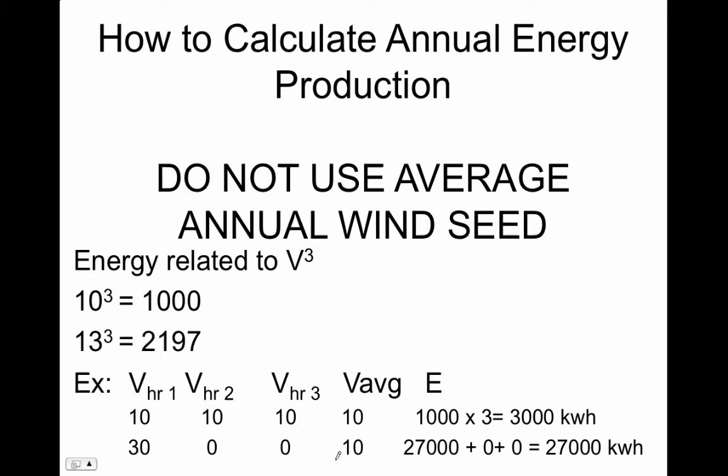The average wind speed can be very confusing. Look at the difference: 10 cubed is 1,000, but a 13 mile per hour wind gives 13 cubed equals 2,197 — just three miles per hour difference in wind speed gives you about twice the power output. So you can't use the average annual wind speed, multiply by how much power the turbine puts out at that speed, and multiply by the hours in a year. That's not going to work.